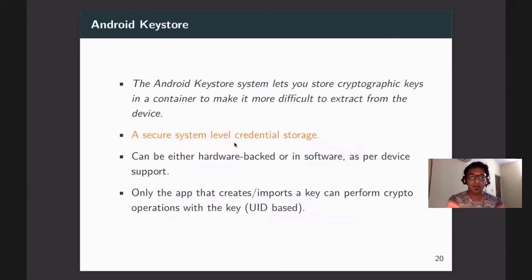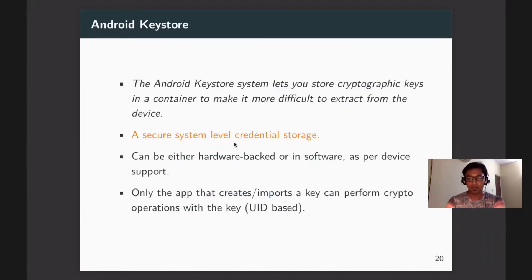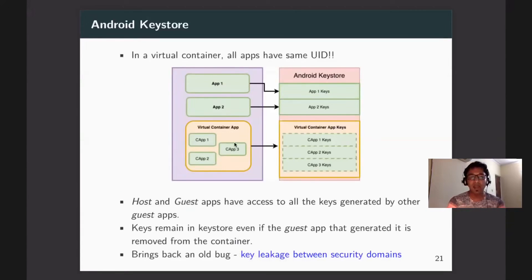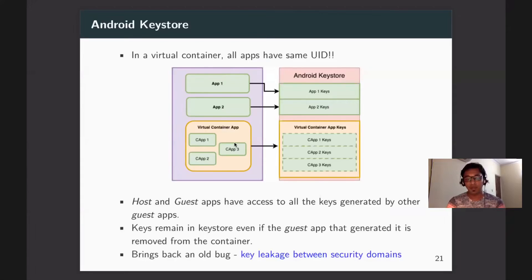The Android KeyStore is a secure, system-level credential storage — hardware-backed on modern devices. Its security depends on the UID of the application. In a virtual container with three guest apps, each having a key in the Android KeyStore, all those keys are accessible from any other guest application — there is no segregation. A similar key-leakage vulnerability between security domains existed in 2014 and was fixed in Android, but these kinds of issues are still present in virtual containers.